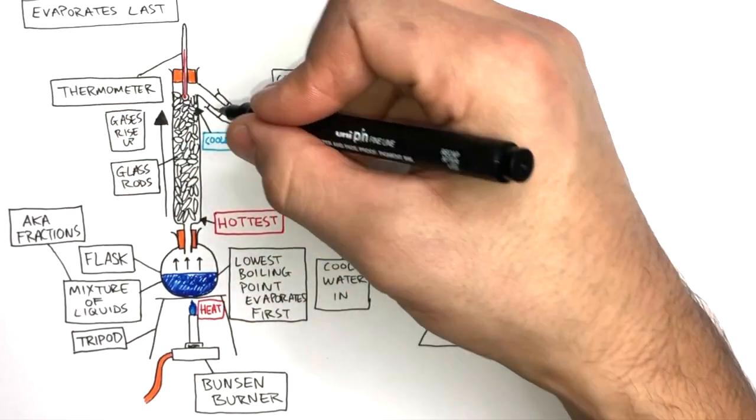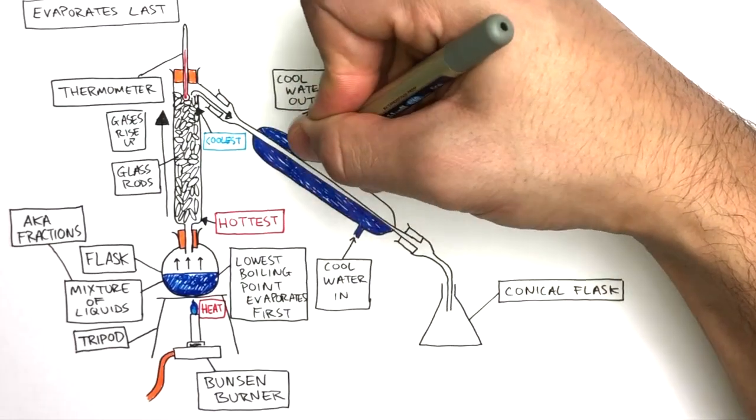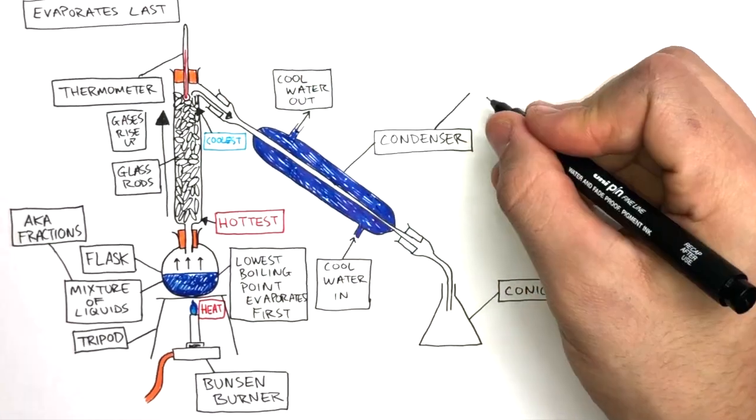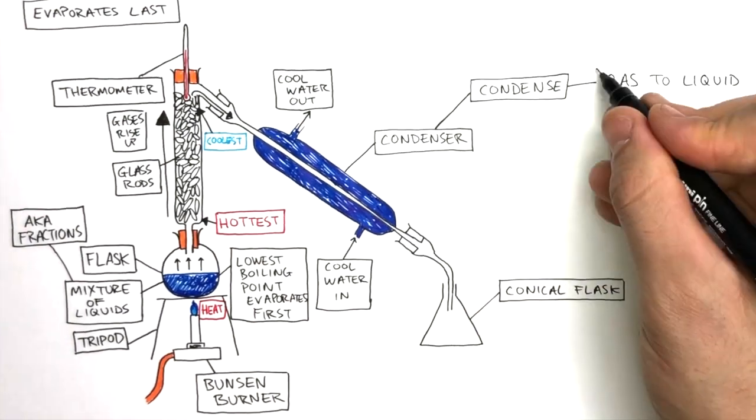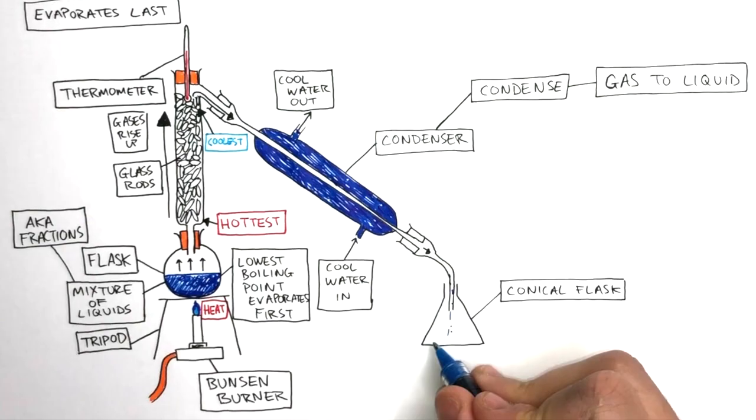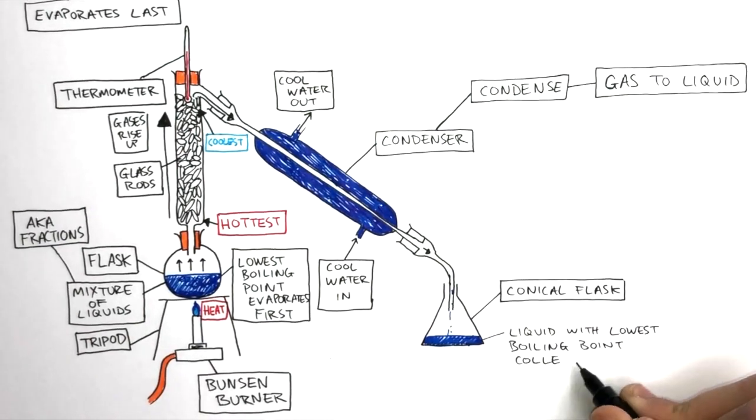This gas then flows into the condenser, where cold water circulating around the delivery tube causes this gas to condense from a gas into a liquid. This liquid is collected in the conical flask, where the liquid with the lowest boiling point is collected first.